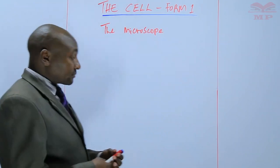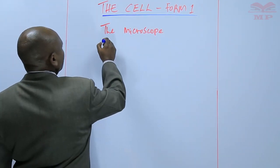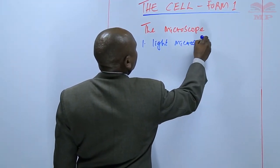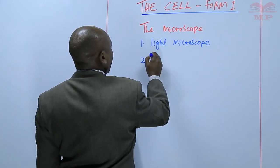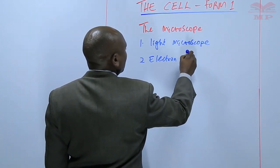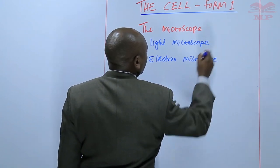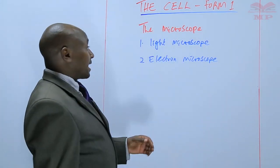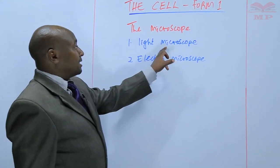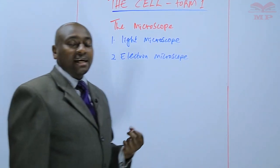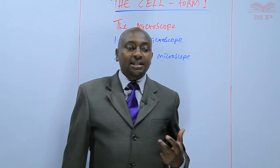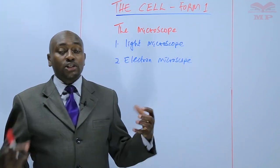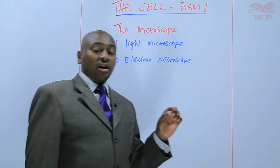We have two types of microscopes. We have the light microscope and we have the electron microscope. The common microscope that we use in schools is the light microscope. It has a certain level of magnification — it can enlarge something that is very small, like a cell, so that you can see more details. We call that magnification.